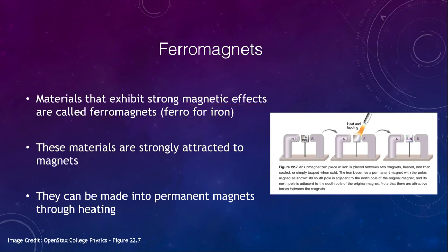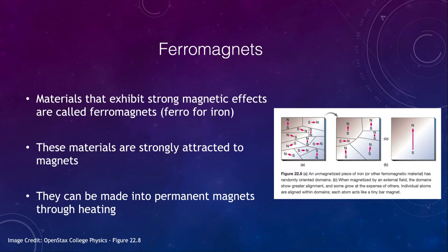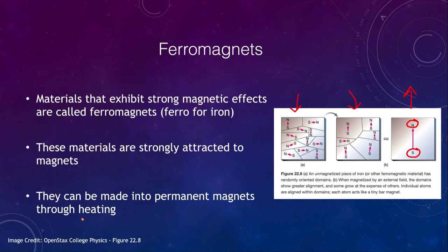How does this work? A typical piece of iron is made up essentially of a whole bunch of little magnets with north and south poles. Overall there isn't a strong magnetic field because the poles point in all different directions and average out. However, as you heat it up and place it in a strong magnetic field, the domains become far more aligned, giving you an overall magnetic field with a south magnetic pole on one end and a north magnetic pole on the other.